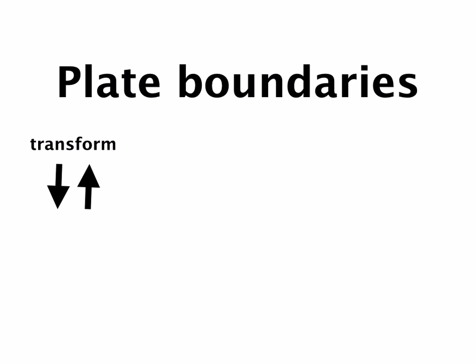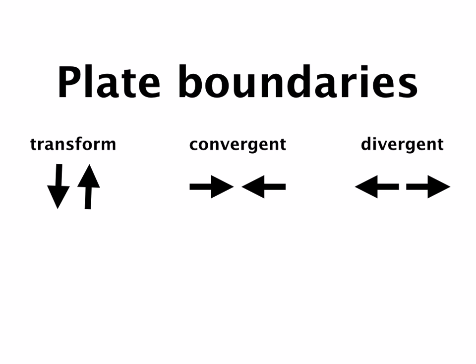Which brings us to those boundaries themselves. All of plate tectonics comes down to the fact that things happen when two plates interact with one another. It really boils down to three types of interactions, three types of plate boundaries. The first is known as a transform boundary, and that occurs when plates slide past one another. We also have convergent boundaries where plates collide, and divergent boundaries where they drift apart. You should be familiar with each of these and the kinds of things we see at each of them.